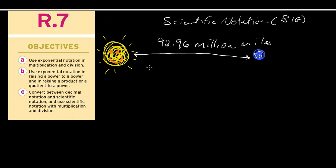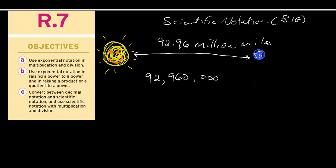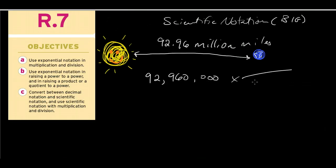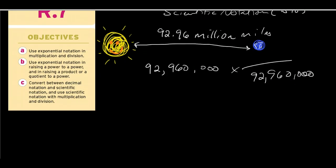The proper way to write this number is 92,960,000 miles. But if I were a scientist doing calculations, either multiplying or dividing by 92,960,000 miles, it's really cumbersome to work with the numerals here. So scientists have come up with their own notation scheme.